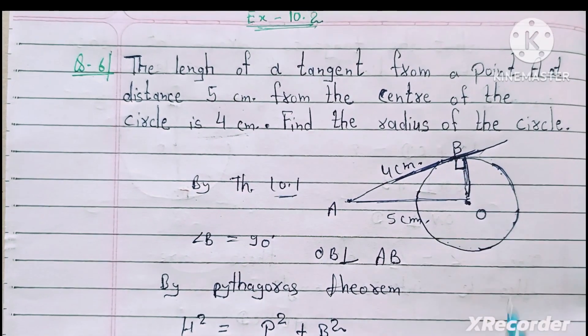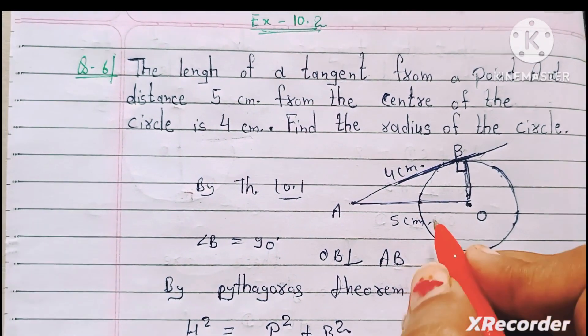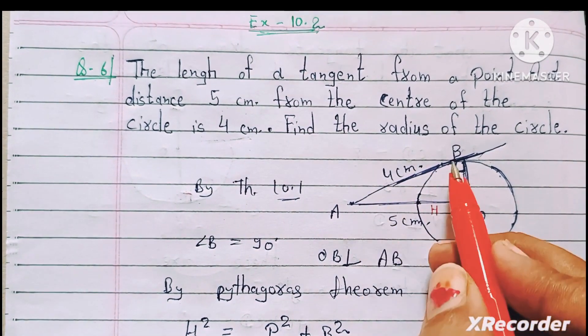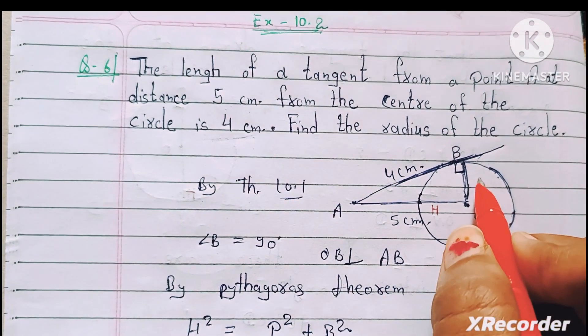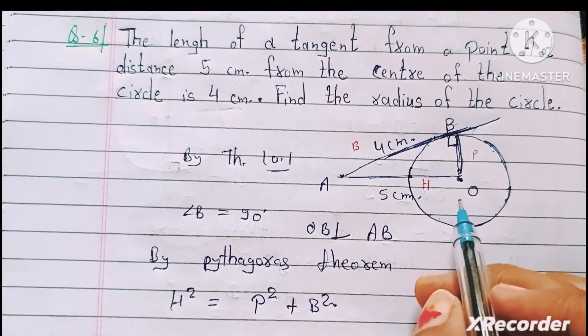Ab isme dhyan se dekhiyega, agar yeh 90 degree hai to 90 degree ke samne ka side always hypotenuse hota hai. Baki jo do side hain wo ek hota hai perpendicular aur ek hota hai base.